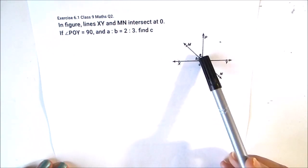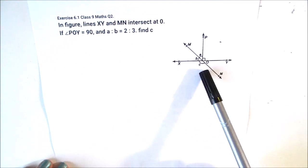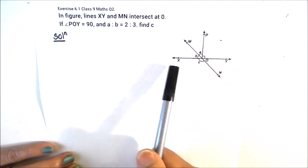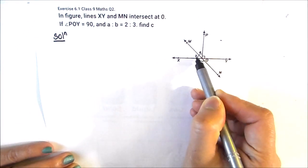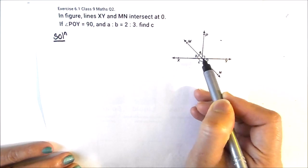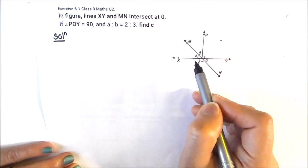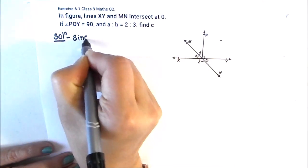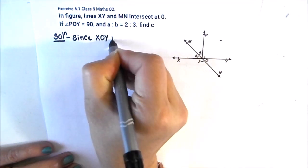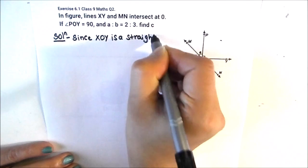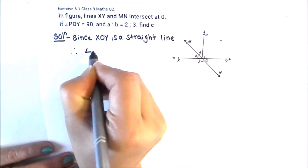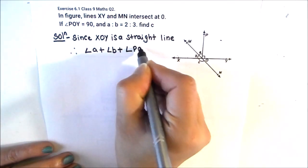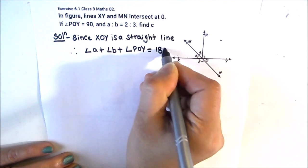A and B are two angles, the ratio of the two angles is 2:3, and we need to find angle C. Let's start with the solution. We see that XOY is a straight line, so the sum of all angles — a, b, and this 90-degree angle — will be equal to 180 degrees, which is equal to a straight angle. Since XOY is a straight line, therefore angle A plus angle B plus angle POY is equal to 180 degrees.